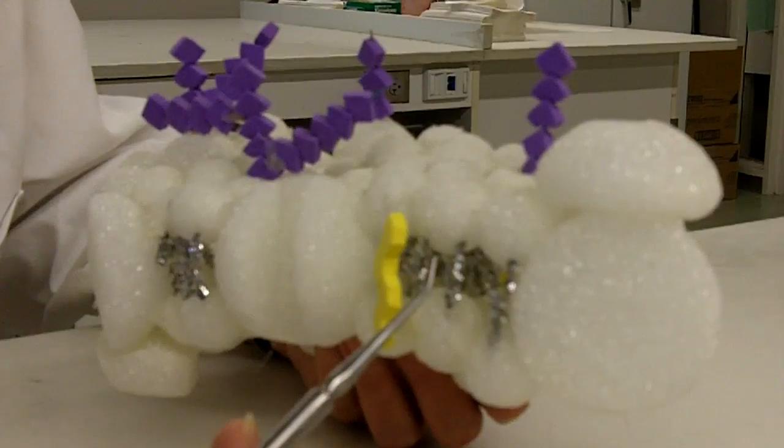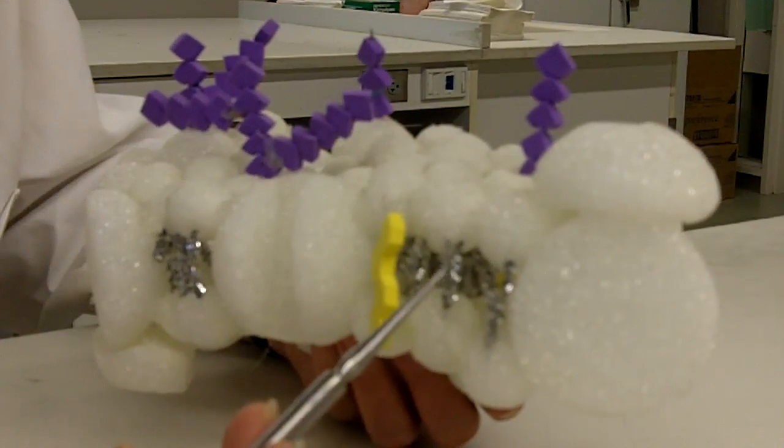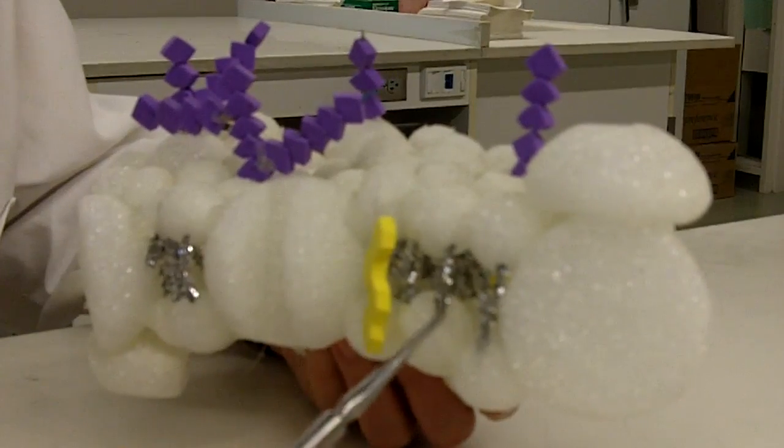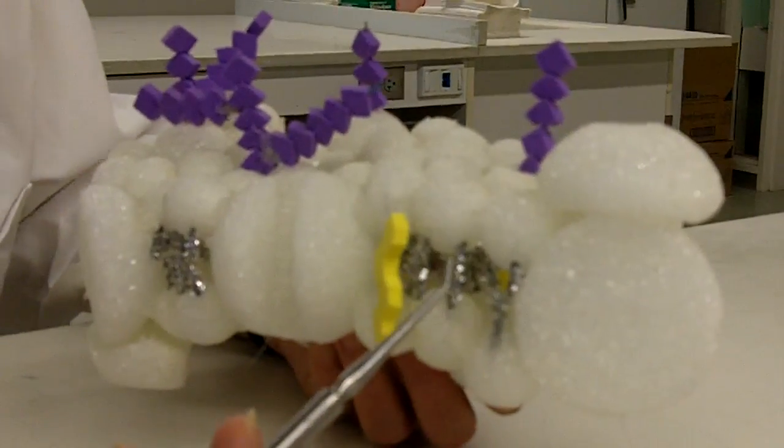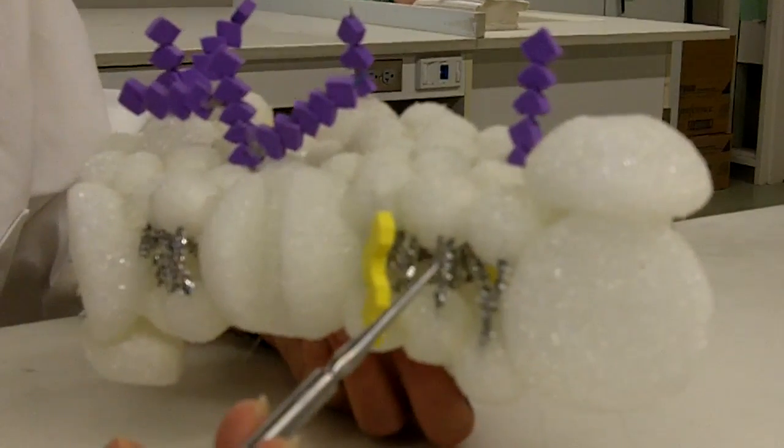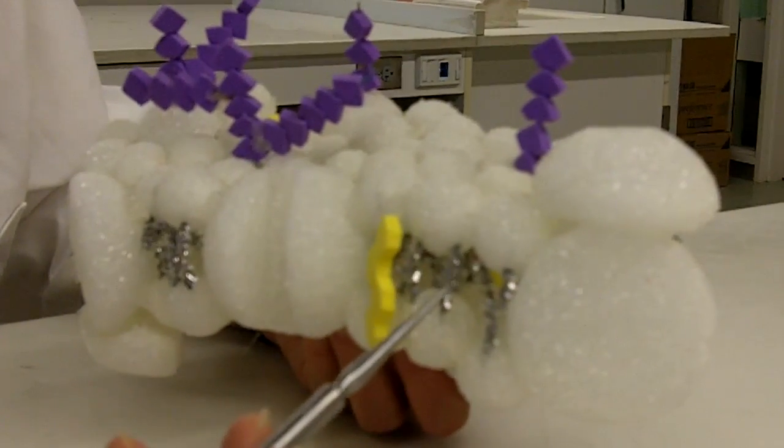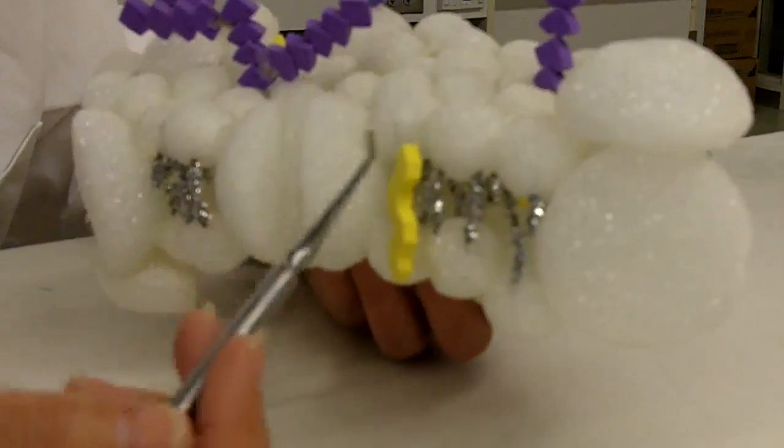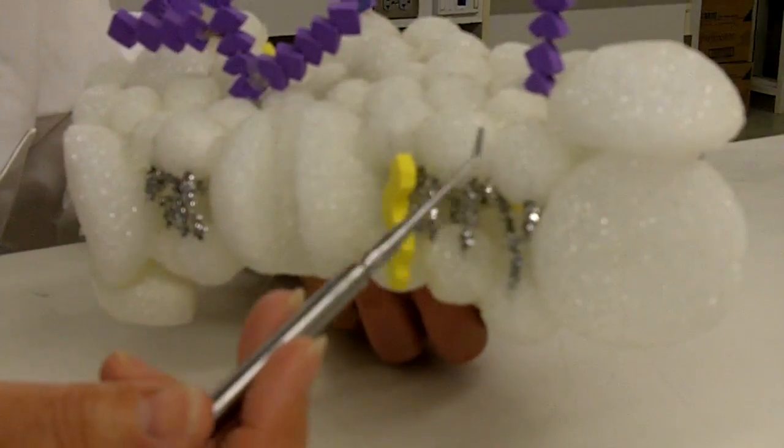Phagocytosis is cell eating. The cell membrane moves out and surrounds the substance and brings it into the cell, which then is inside a vacuole that combines with a lysosome. The lysosome has the enzymes that digest the food. So those are examples of endocytosis, phagocytosis, pinocytosis.